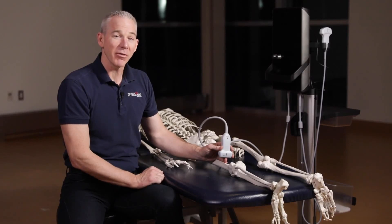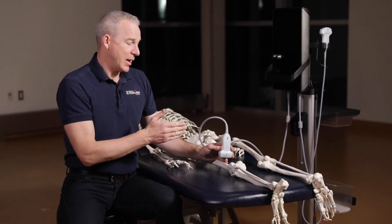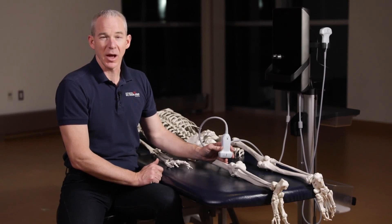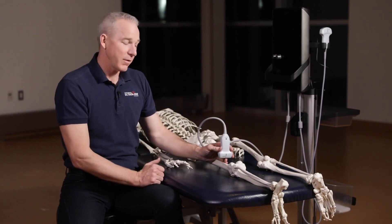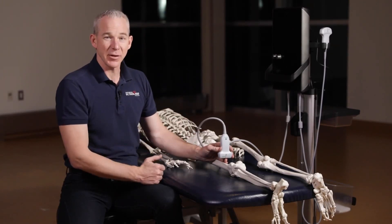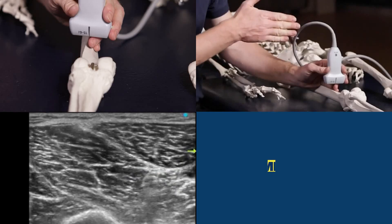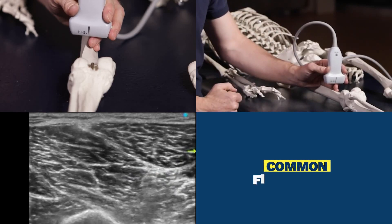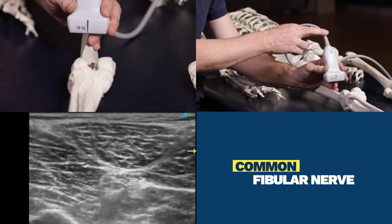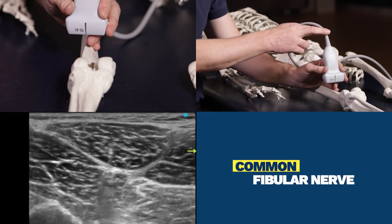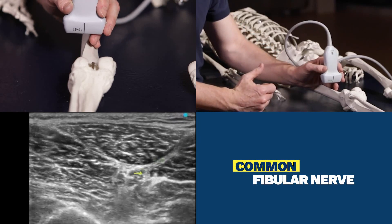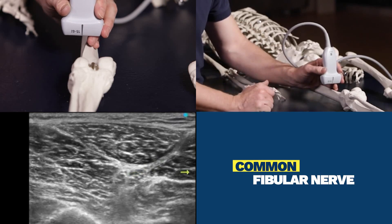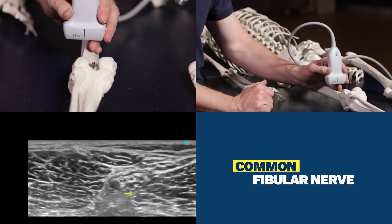Here we're going to pick up where we left off with the sciatic nerve at the location it bifurcates to become the tibial nerve and the common fibular nerve, previously known as the common peroneal nerve. The orientation of the probe is going to be transverse on the femur. The landmark is going to be the posterior femur. The movements are going to be angling until we can see the femur bright, but we also want to angle until we can see the sciatic nerve nice and bright. We then move the probe or slide distally until we see a bifurcation.